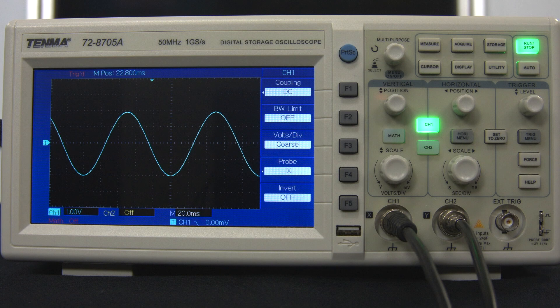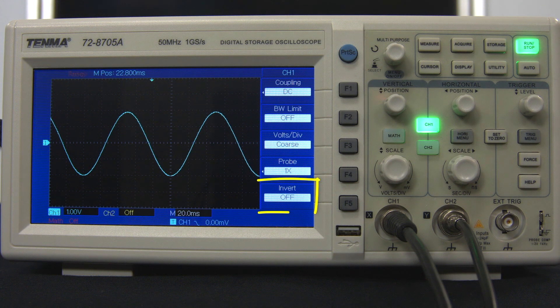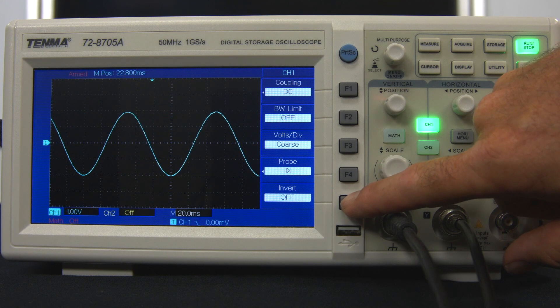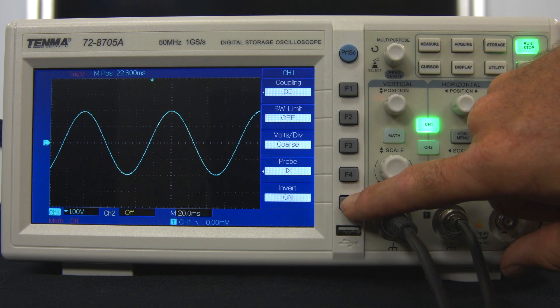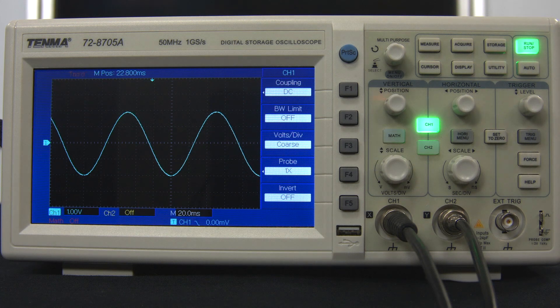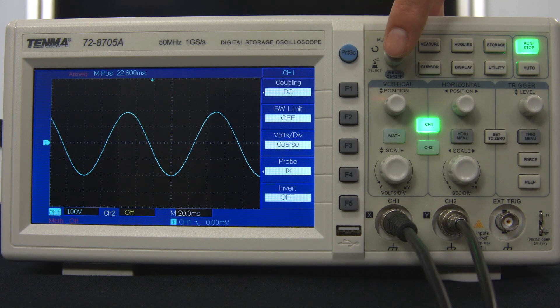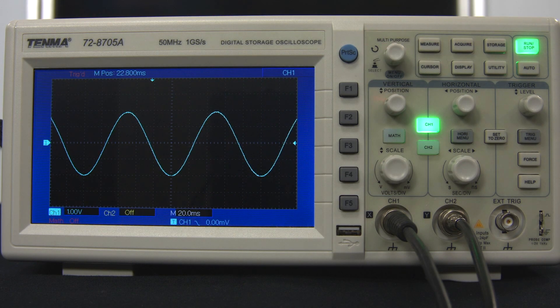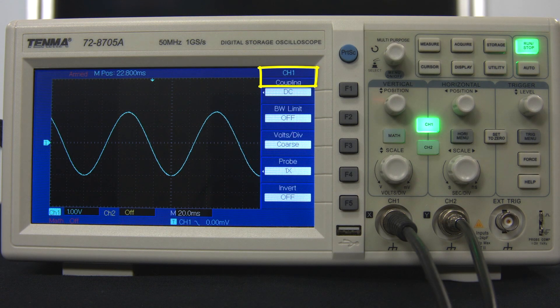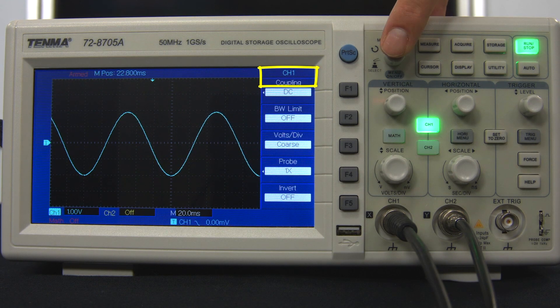Some menu options have only two possible choices, and pushing the function button toggles between them. For example, the invert function for channel 1 can either be on or off, so pushing the F5 function button switches between these two settings. After settings have been adjusted, it is useful to close the menu, since it blocks part of the screen from showing the signal. The way to close the menu is to simply press the multipurpose button. If there is no menu showing, then pressing the multipurpose button opens the most recently used menu, as indicated at the top right of the screen. In this case, it is the channel 1 menu. Pressing the multipurpose knob again closes the menu.